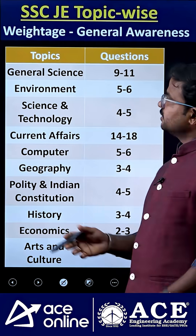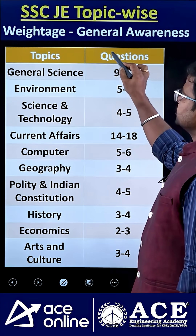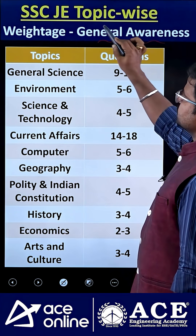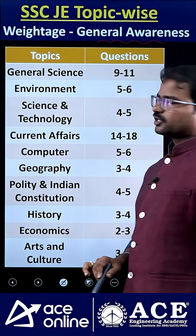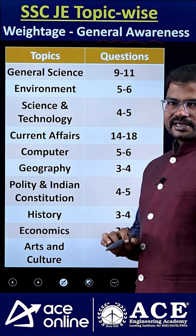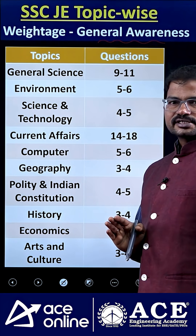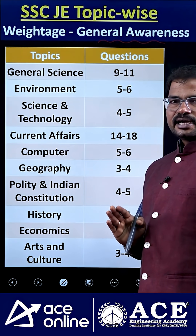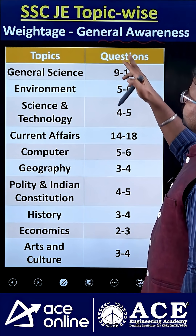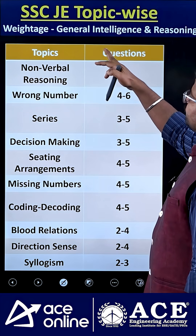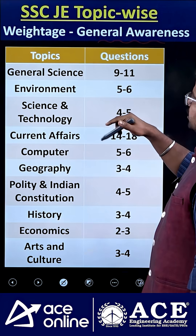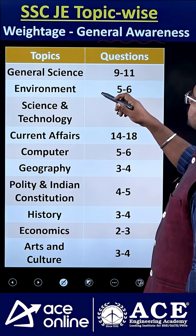Welcome to ACE Online. This is the weightage of general awareness, especially from an SSC JE point of view. In paper one, we are getting around 200 questions. In those 200 questions, 100 questions — 50 questions are from general awareness and 50 questions are from general intelligence and reasoning. Here is the topic-wise analysis.